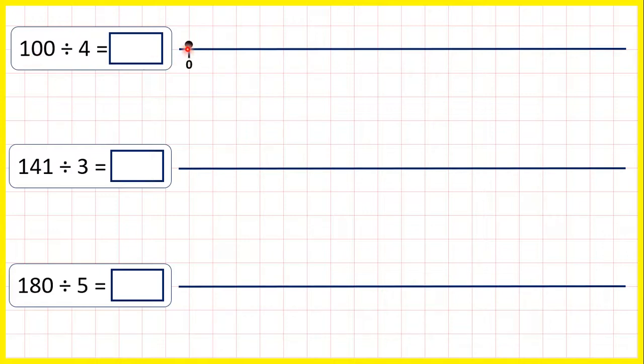But here it would take a very long time to count up in 4s until we reached 100. So on our number line, instead of jumping in 4s, we can make one big jump of 10 times 4, which is 40. So if we jump 10 4s, we get to 40.